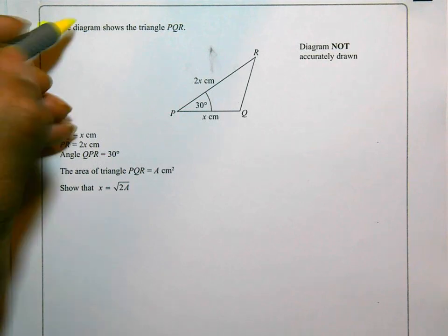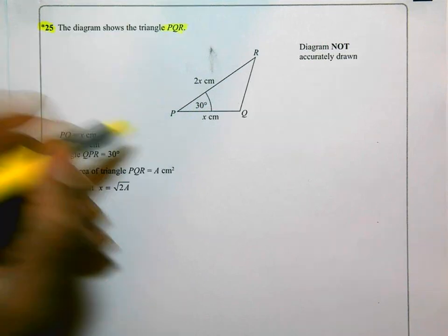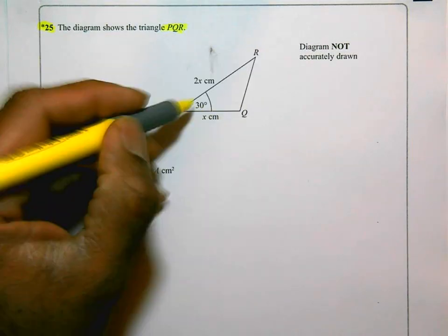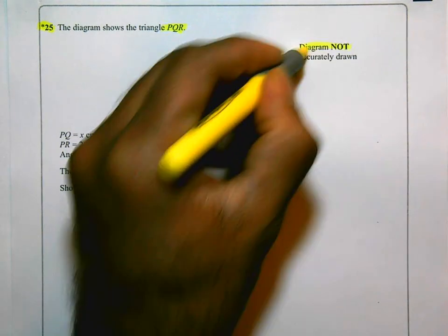And it says the diagram shows a triangle PQR. Here's the triangle. It's not a right angle triangle. They've labeled some sides and there's an angle, and they've also said the diagram is not drawn accurately.